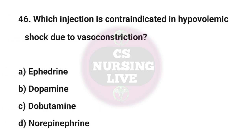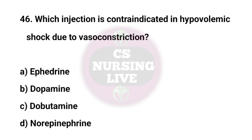Question No. 46. Which injection is contraindicated in hypovolemic shock due to vasoconstriction? Right answer is D. Norepinephrine.